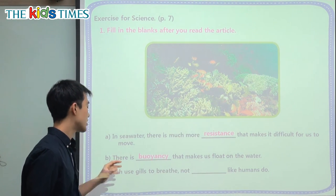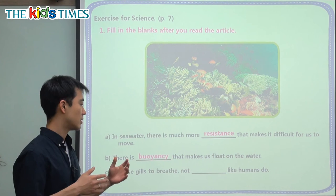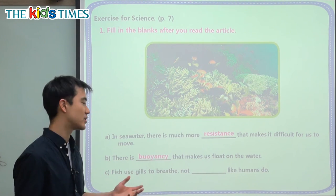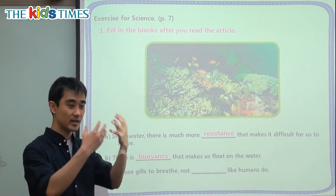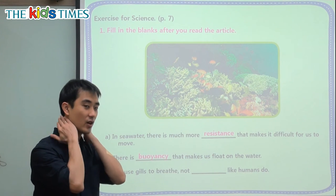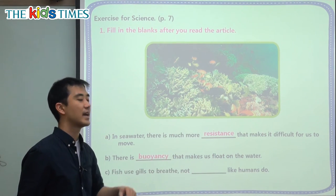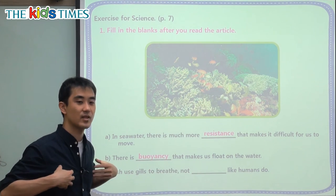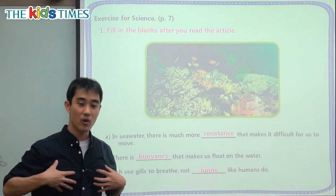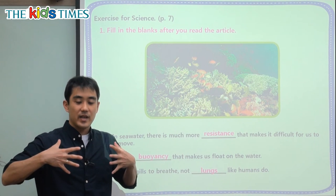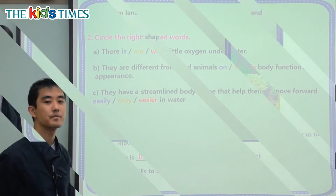Question C: Fish use gills to breathe, not blank like humans do. So this is how we breathe — breathing is how we get oxygen. And fish, they use something called gills. Not like humans do. Humans don't have gills — we have something called lungs. We have two lungs, one here and one here. When we breathe, they get big and then go out. That's how we breathe.